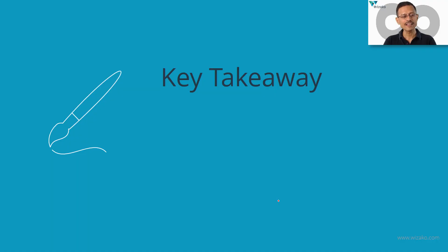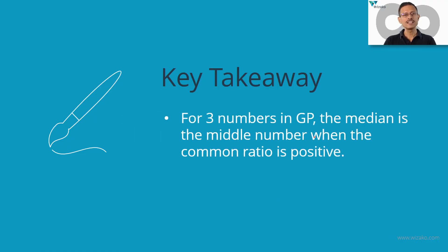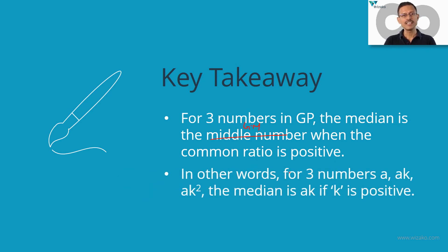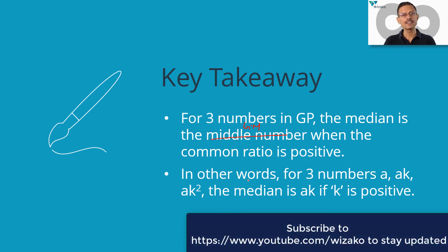Quick takeaway: for three numbers in GP, the geometric mean will be the median when the common ratio is positive. In other words, if you have three numbers A, AK, AK², then AK will be the median provided K is positive.